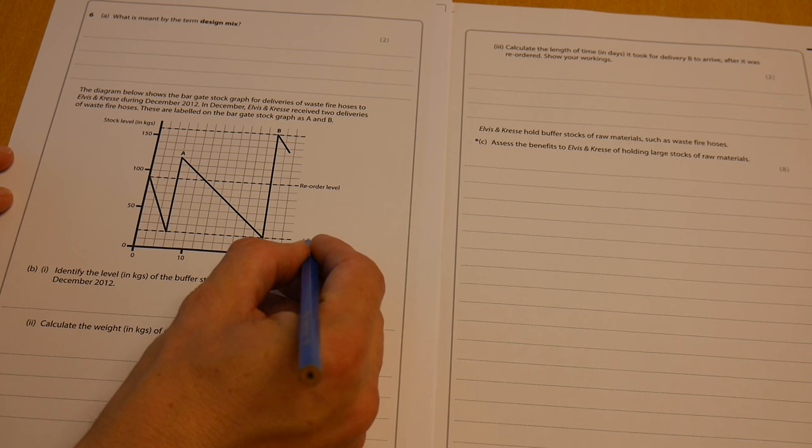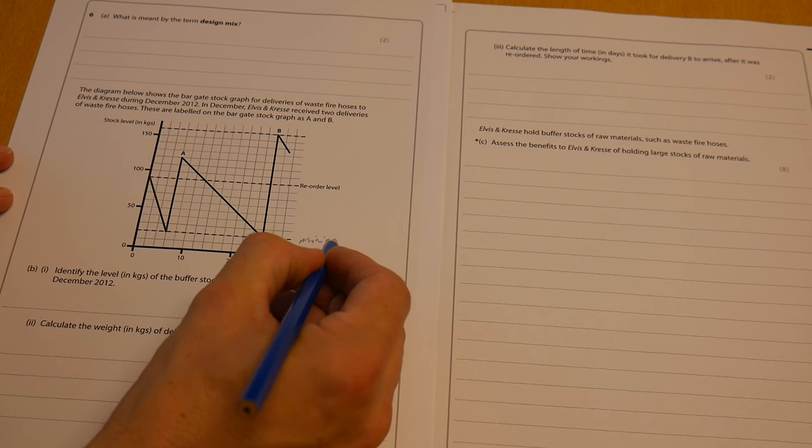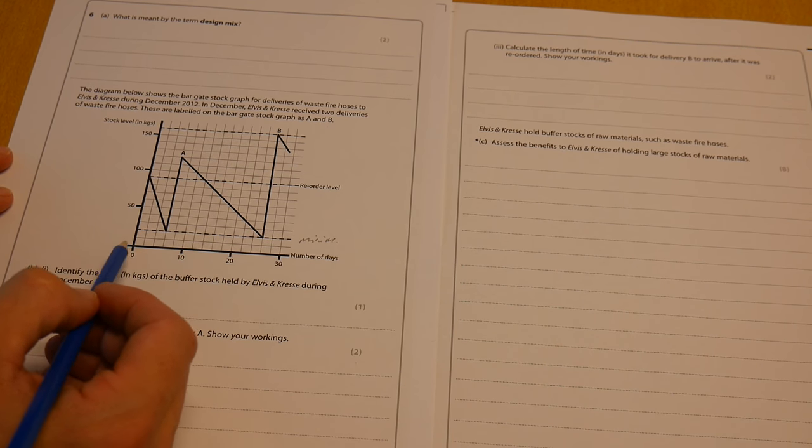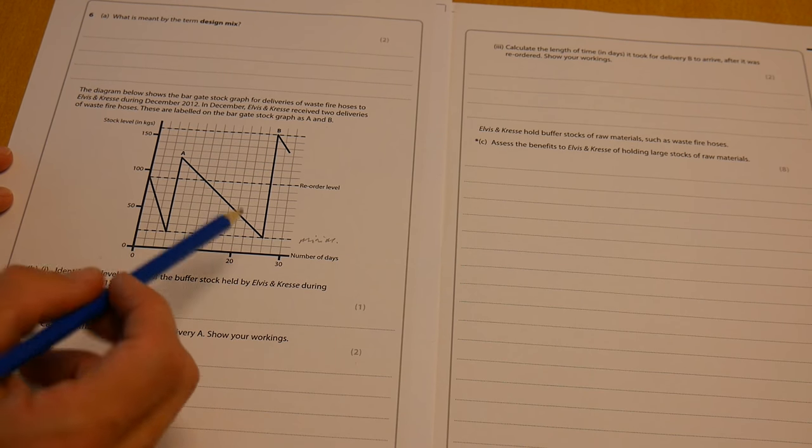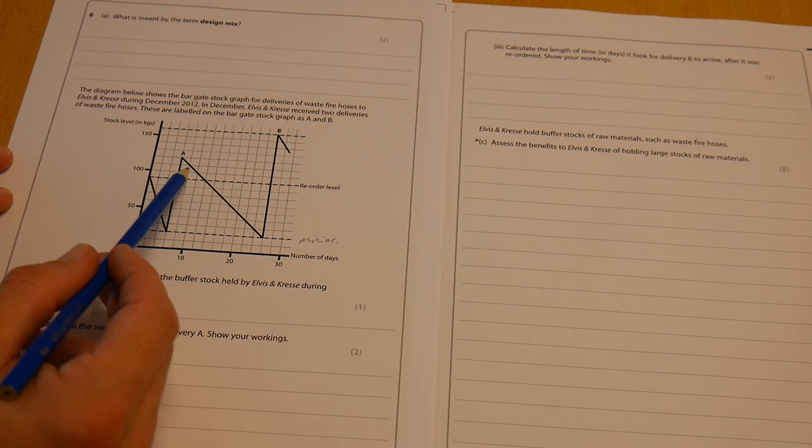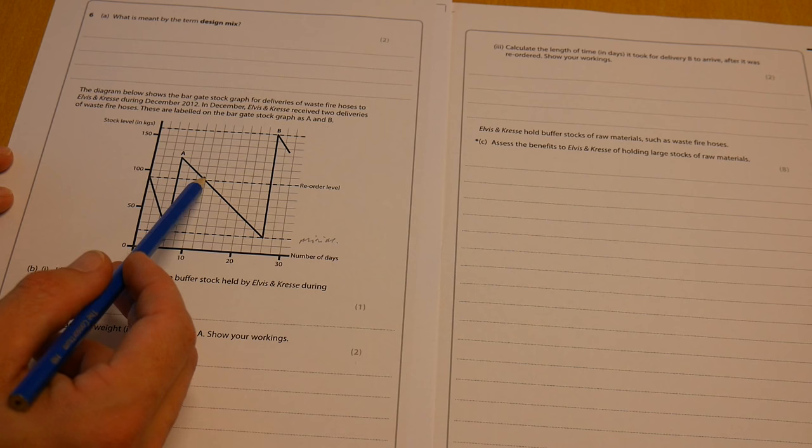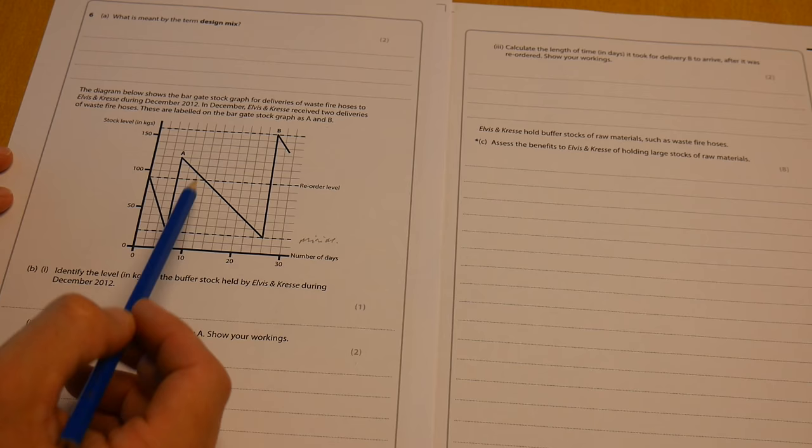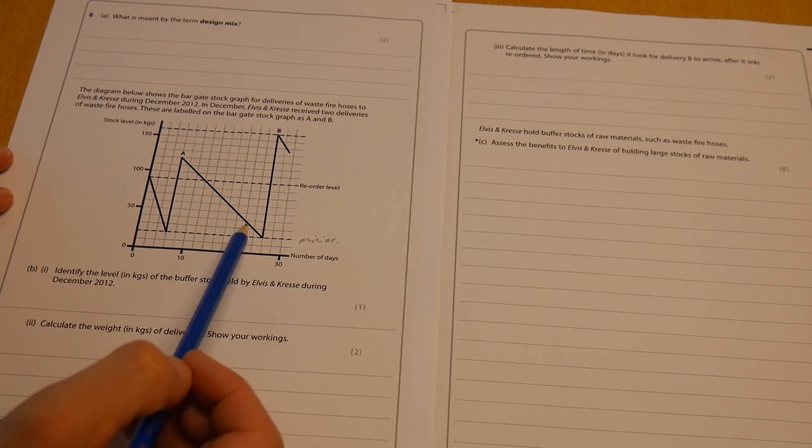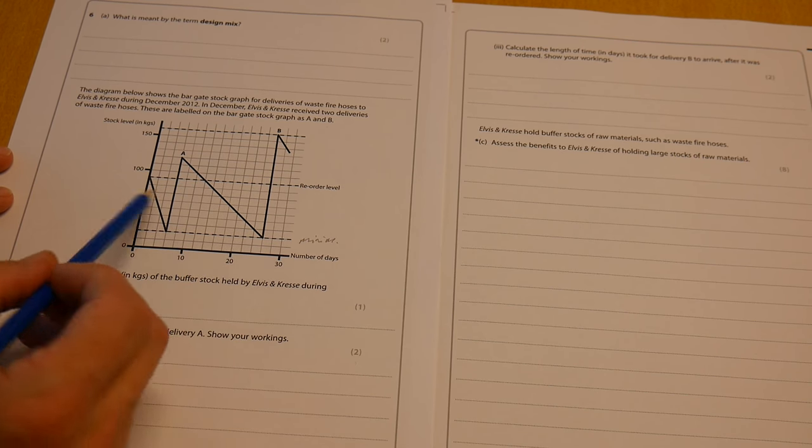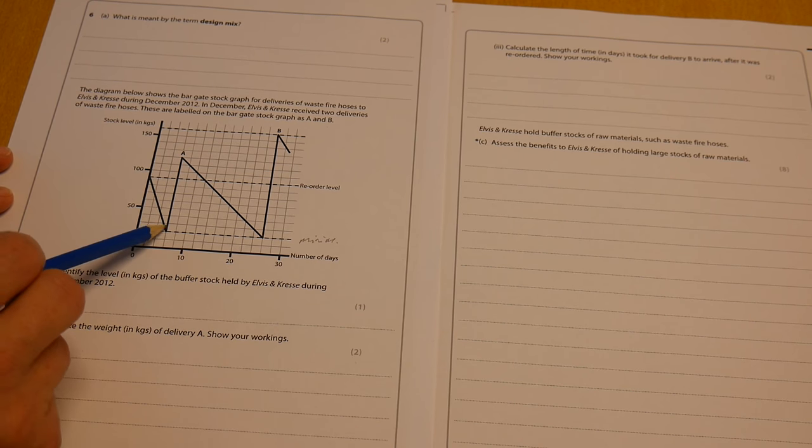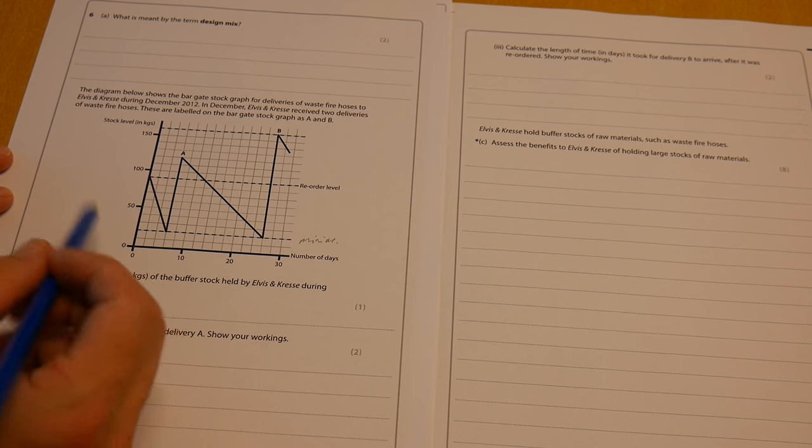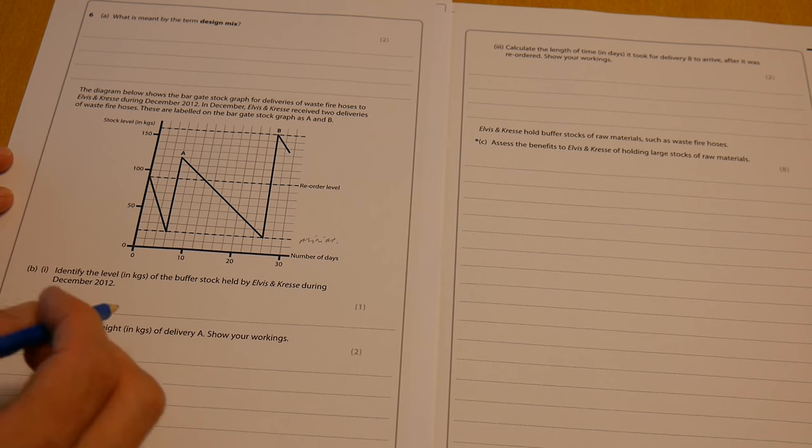Now, remember what we've got here. We've got a minimum or a buffer stock level of stock here represented by this horizontal line above the zero point. We've got a reorder level. So at this point when stock is sold, then the reorder comes through. We can see that's taken a bit of time to actually get that new delivery in. So that's a little bit of a worry. In contrast to this one, the order seemed to come through quite quickly. It says the number of days along here. So anyway, let's look ahead and check out these questions.